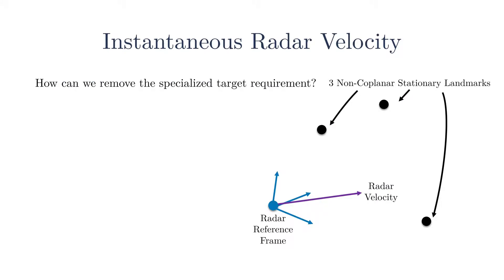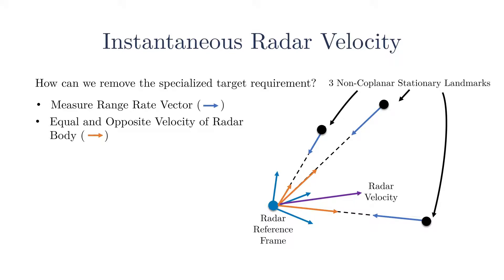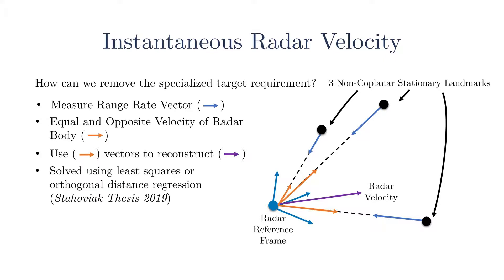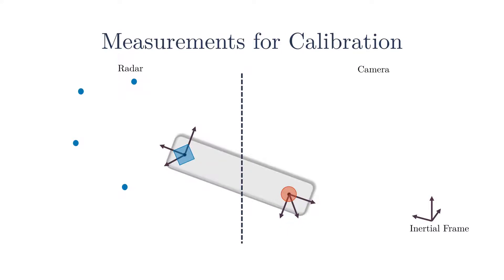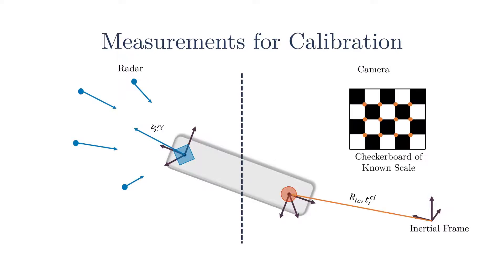Let's start by investigating what system properties we can measure instantaneously. If we measure three non-coplanar stationary landmarks, then we will measure three range rate vectors. These vectors can be inverted and made relative to the radar body, which can be used to reconstruct the radar velocity vector using either least squares or orthogonal distance regression. As a result, our two measurements for extrinsic calibration are the velocity of the radar in its own reference frame and the pose of the camera relative to some inertial reference frame.